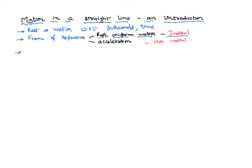If a body is in the state of motion, it will be changing its position from point A to point B. The actual path followed by the body is called distance. And if I draw the shortest line between initial and final positions in a specified direction, that is called displacement.